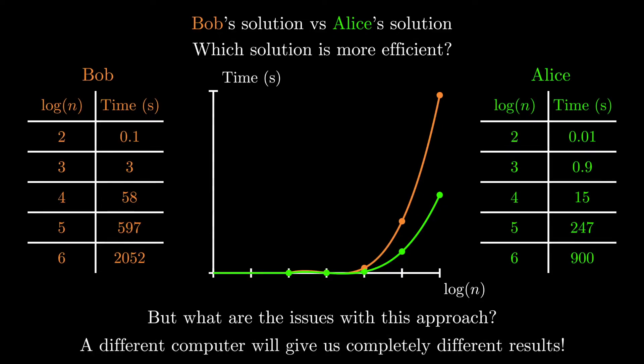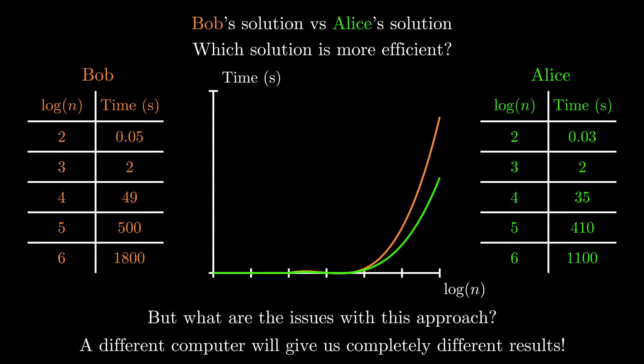The second big issue here is that all these time measurements are taken on one specific computer. On another computer, these data points may completely change. For example, on a supercomputer, the time to execute these tasks might be much lower for both algorithms. This issue hints at something we call machine dependence.